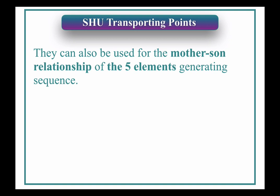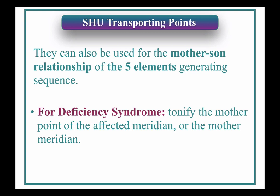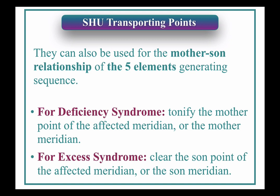If there is a deficiency syndrome, we tonify the mother — that's the five element theory. If there's deficiency in the generating sequence, we tonify the mother. With the Shu transporting points, we're going to tonify the mother point of the affected meridian or the mother meridian. For excess syndrome, we clear the son — we clear the excess, we clear the baby, we clear the son point of the affected meridian and the son meridian.